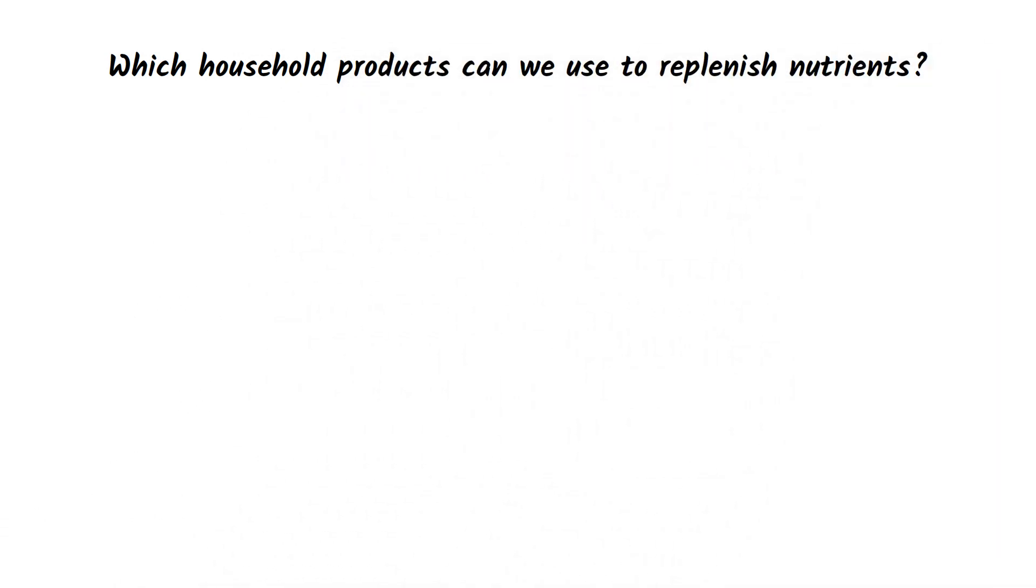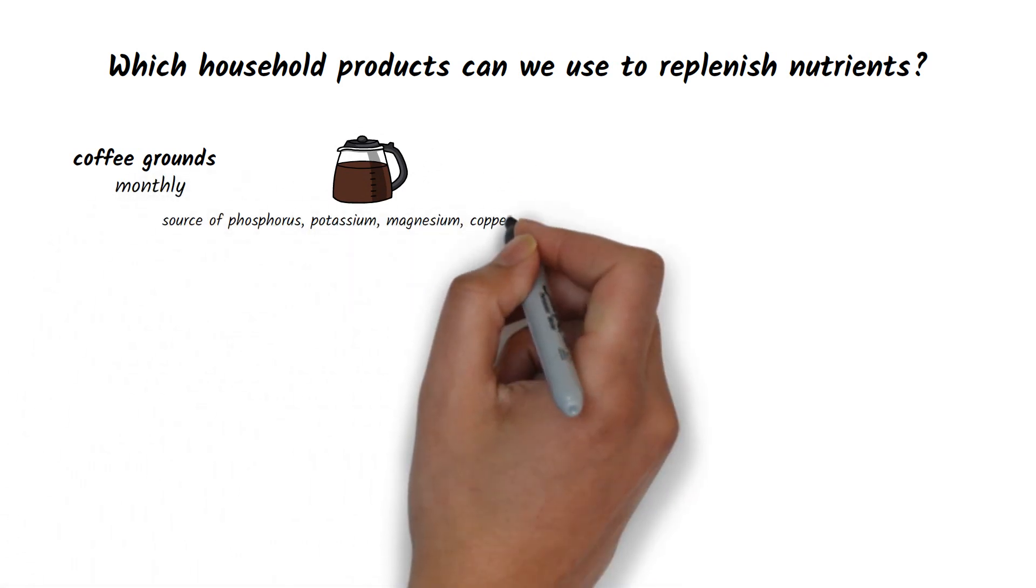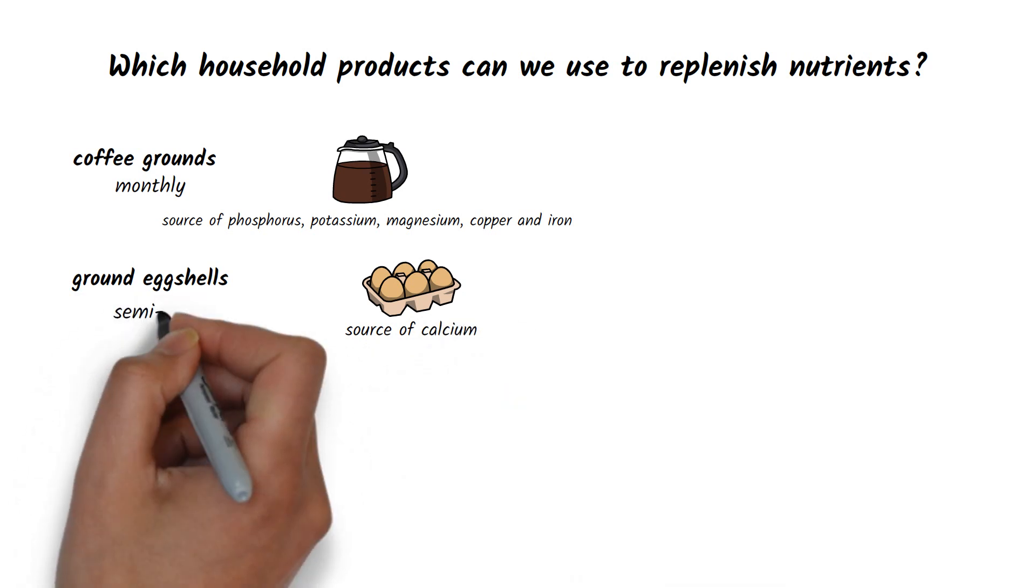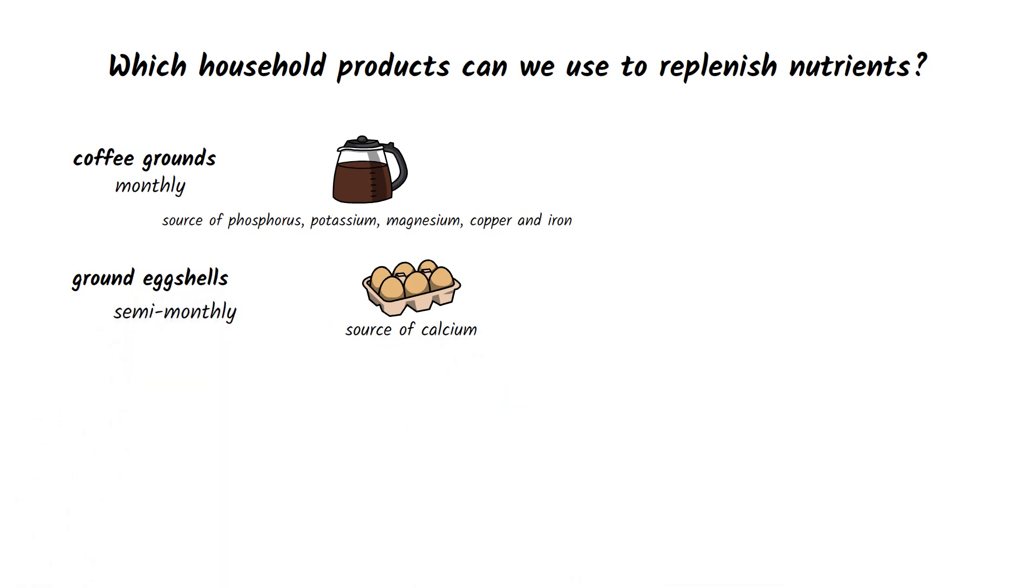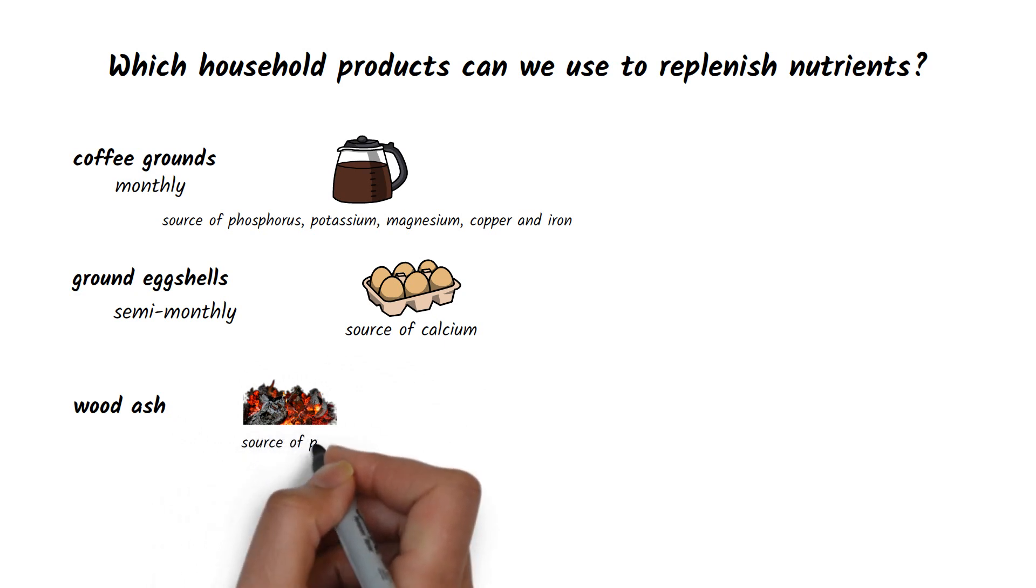Which household products can be used to replenish nutrients. Coffee grounds, which can be added to the plants once a month. Ground egg shells provide the calcium needed for plants, just add them twice a year. Wood ash is a source of potassium. You only need to add it once a year and you can collect it either from the fireplace or after a barbecue.